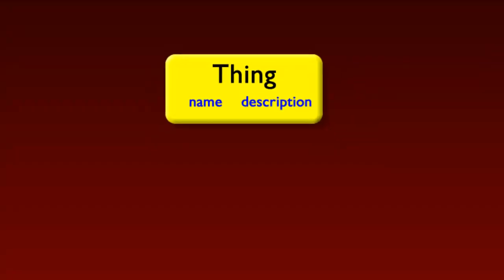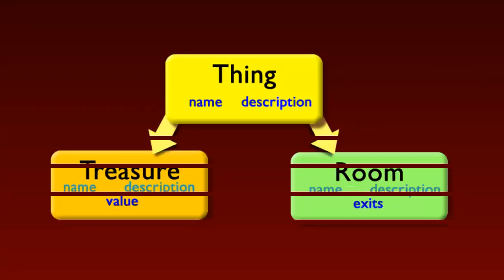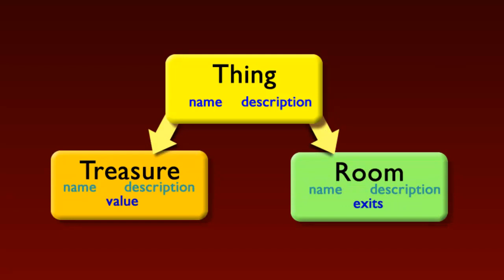And now I want to create a Treasure class and a Room class. And these are the blueprints from which usable Treasure and Room objects can be created. And these too have names and descriptions. But since I already have a class that handles those, I just decide to make both the Treasure and the Room class descend from the Thing class.